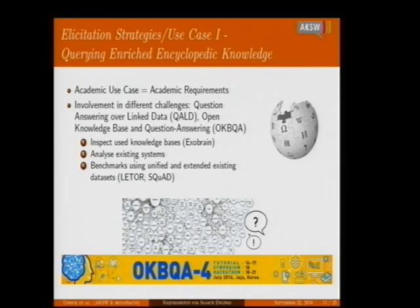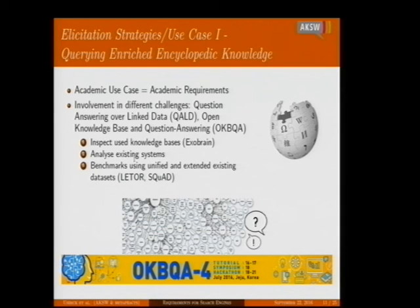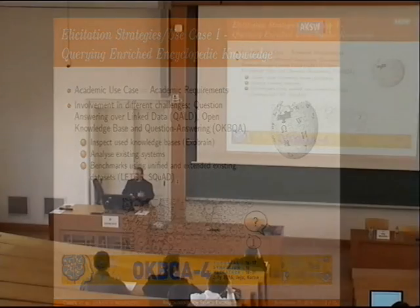The elicitation strategy had three major points: analyze existing systems and components, use current benchmarks, and also consult outdated benchmarks like LETOR and SPOT which ran until 2011 when Peter Mika went to Yahoo but nobody maintained them afterward. This is one of the major problems in our research field — benchmarks that get outdated and are no longer representative of the state of the art, which hinders our research.